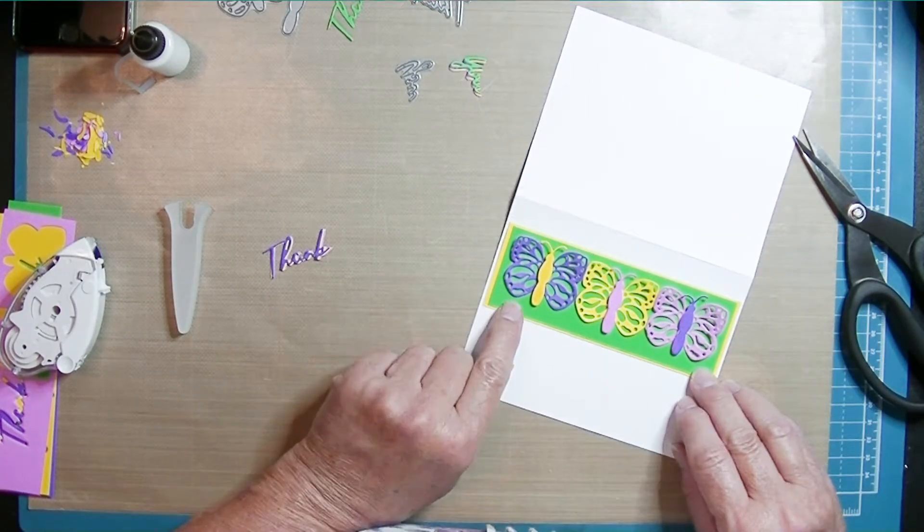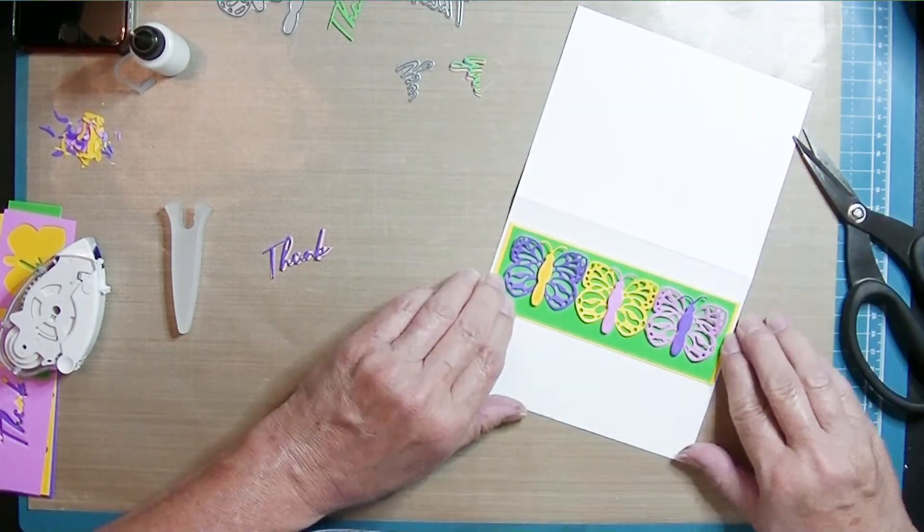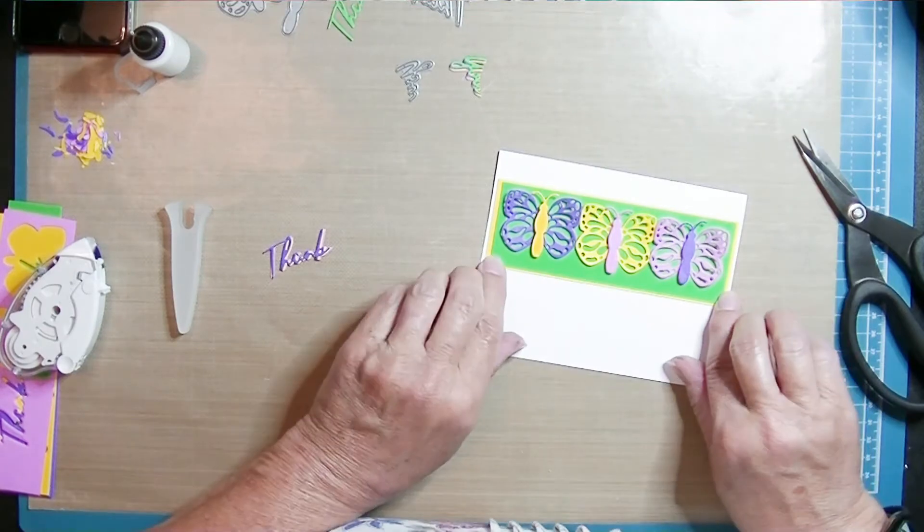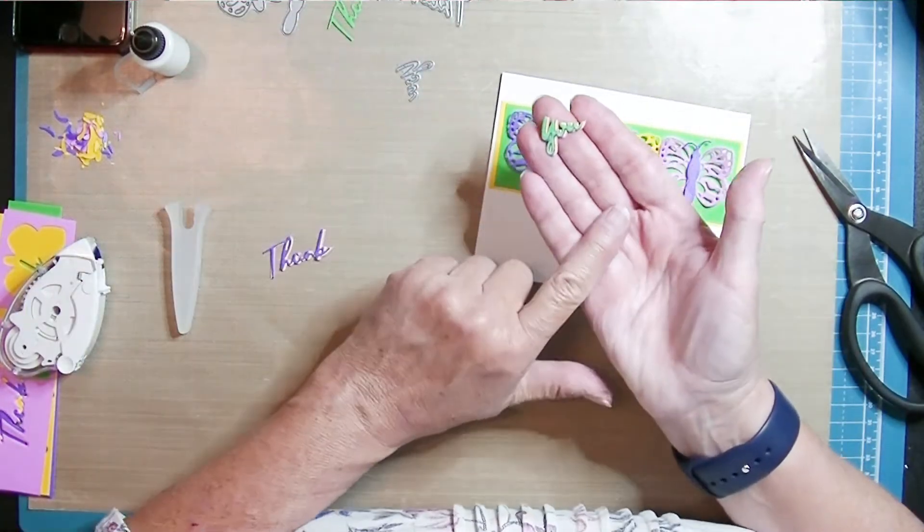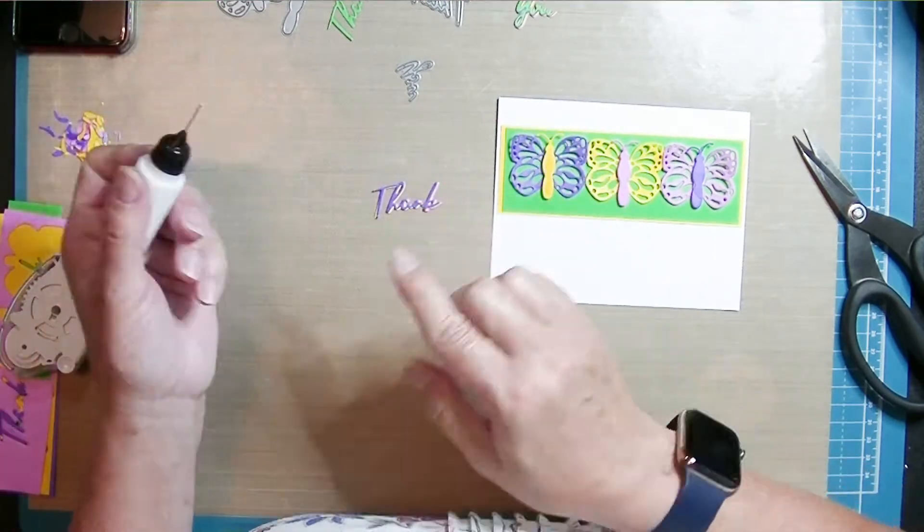So here I'm just adding the panel to the front of the card. And I put it a little toward the top. I just liked the way that looked better. And I decided that I didn't want the sentiment. I didn't like the sentiment on top of the images. So I'm going to put it below.